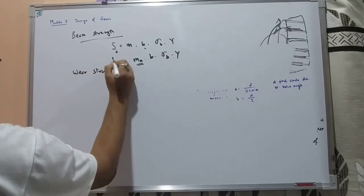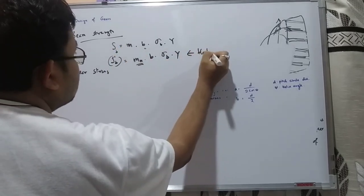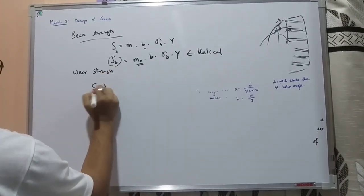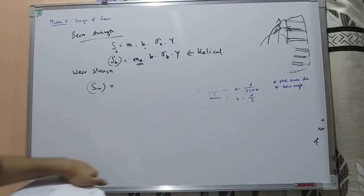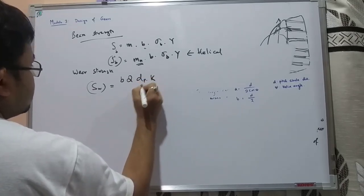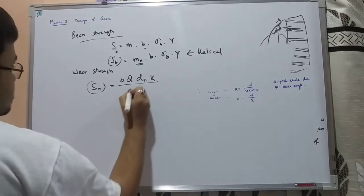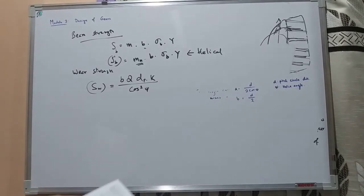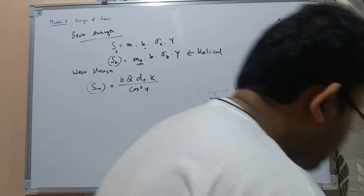For wear strength of the helical gear, the formula is: Sw = b·Q·d·K / cos²ψ, where b is the face width, Q is the ratio factor, d is the pinion diameter, K is the load stress factor, and ψ is the helix angle. These formulas are available in the data book.